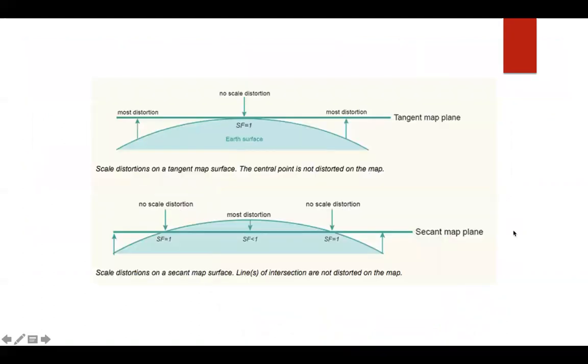Here's another view of this for azimuthal. On the tangent, there's no scale distortion at just one point. On secant planar projections, there's no distortion where that goes through, which would make a circle.